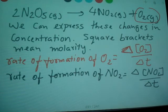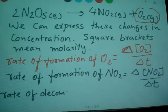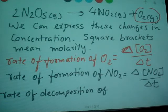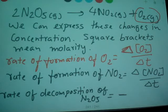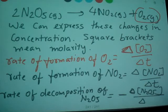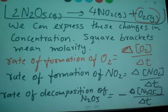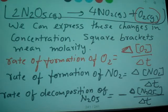When you write the rate of decomposition of N2O5, you write a negative sign because it's decomposing — it's being used up — so it's negative delta concentration of N2O5 divided by delta T. That's how you express mathematically the concentration changes of reactants and products.